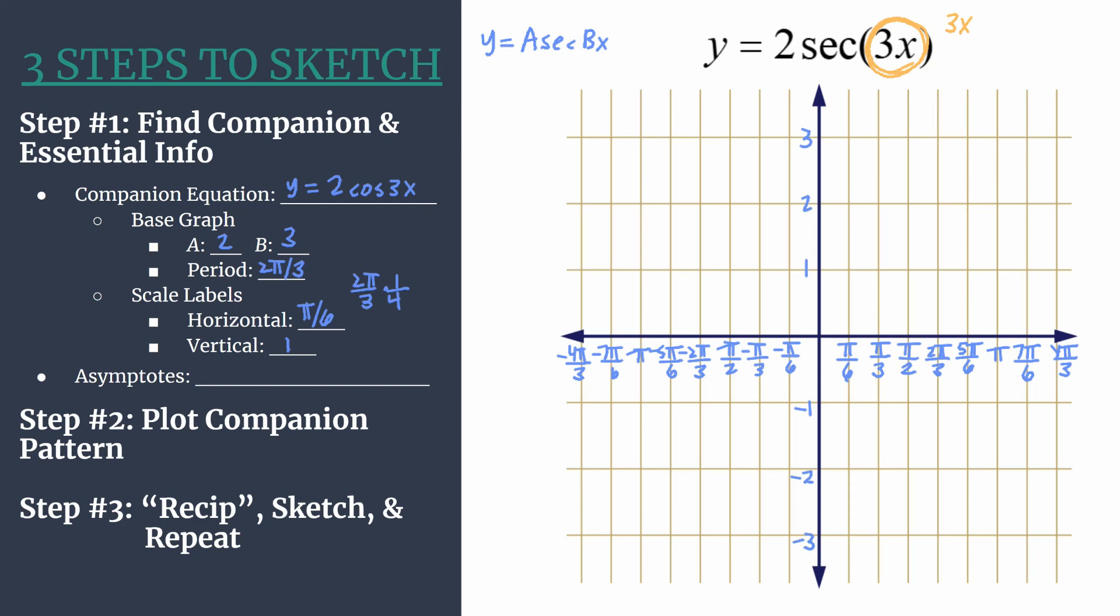Those happen at π over 2 plus πk because when we take the reciprocal of cosine, if you take the reciprocal of 0, you end up with an undefined point, which is a vertical asymptote. This setup allows us to transform those original asymptotes to the graph that we actually want.